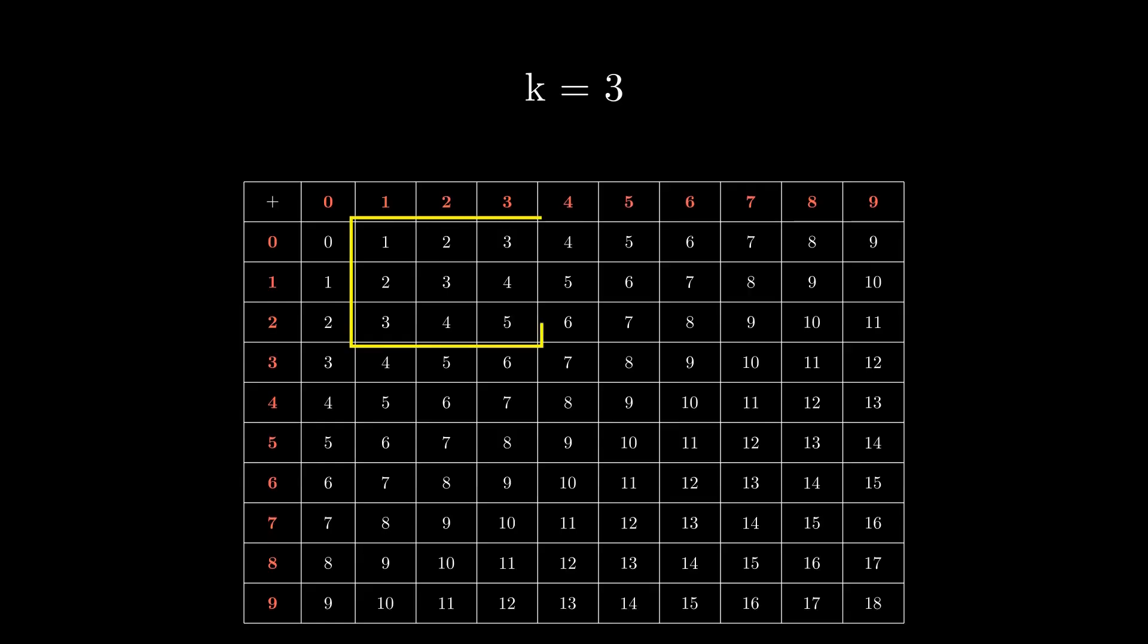Take a square subgrid of side length 3 inside the table. Add up all the numbers on the border of this subgrid, and then compute their average. The result? It's exactly equal to the number in the center of the grid.